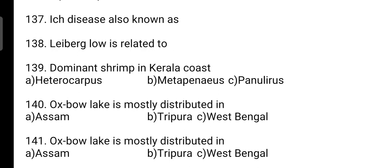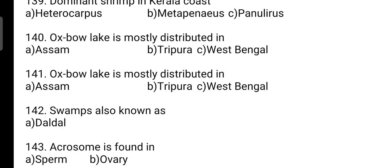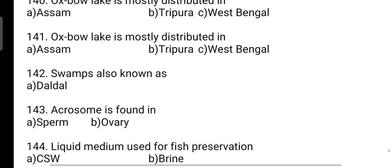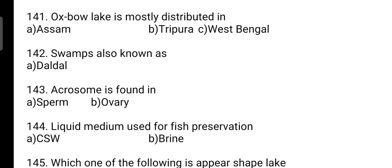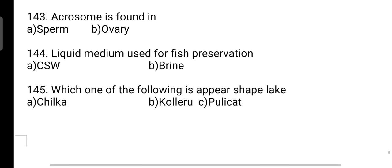Suitable species for sea cage culture: correct answer is Option B — it is cobia (there is some confusion with salmon). Whirling disease is caused by: correct answer is Option A — Myxobolus cerebralis. Ick disease is caused by Ichthyophthirius multifiliis, also known as white spot disease. Dominant shrimp in Kerala coast: likely Metapenaeus. Oxbow lake is mostly distributed in Assam where it is known as beel. Swamps are also known as dal.